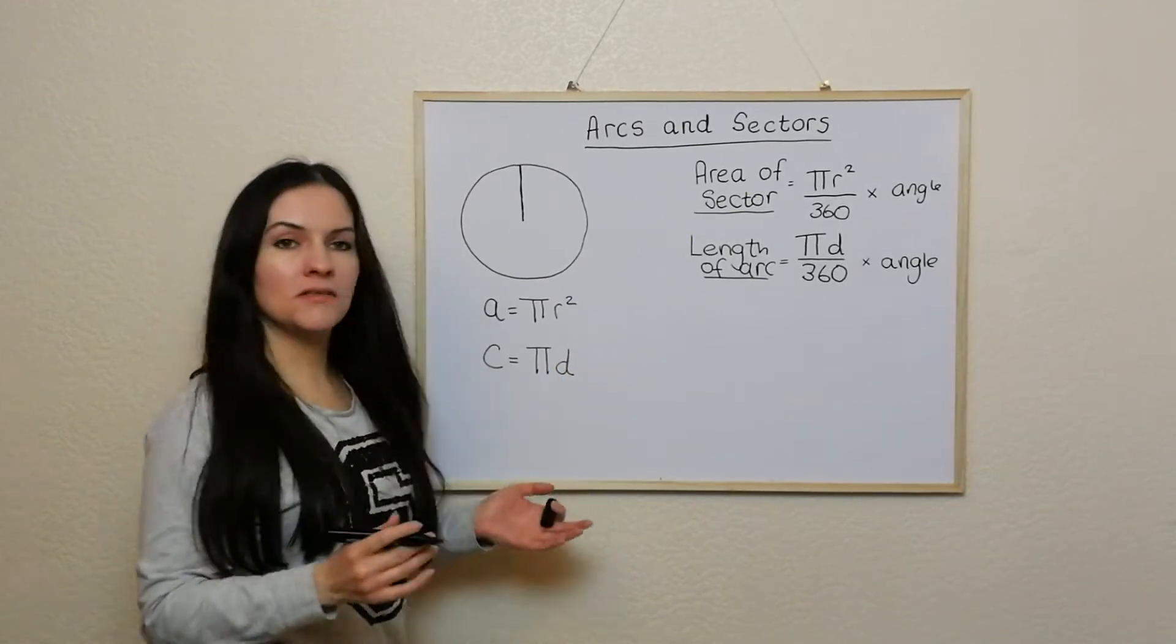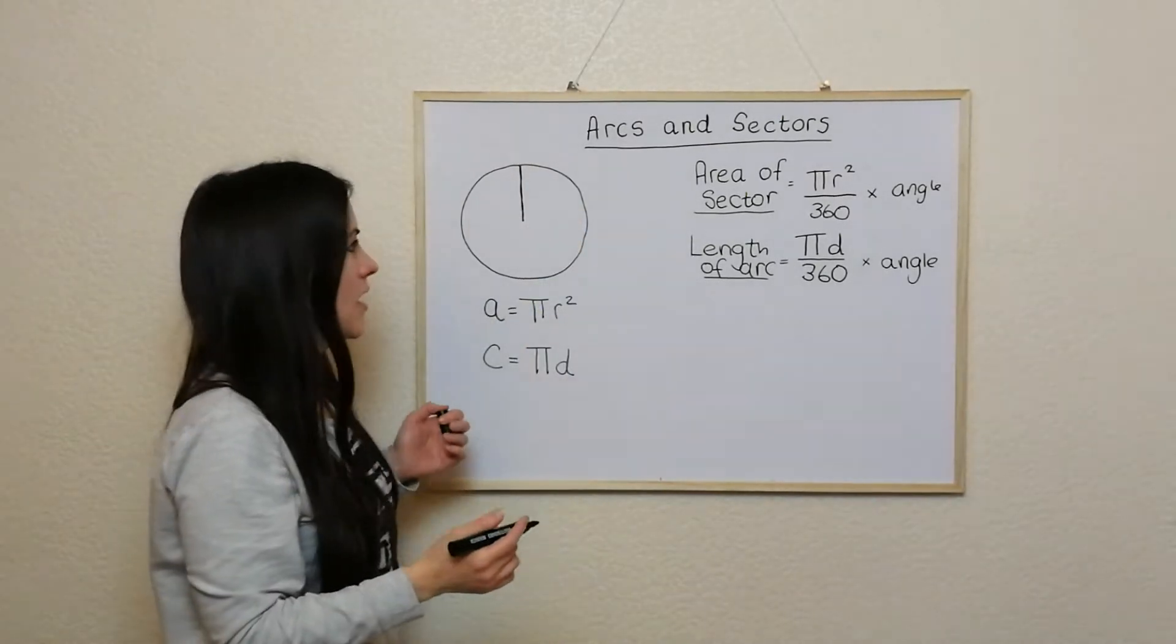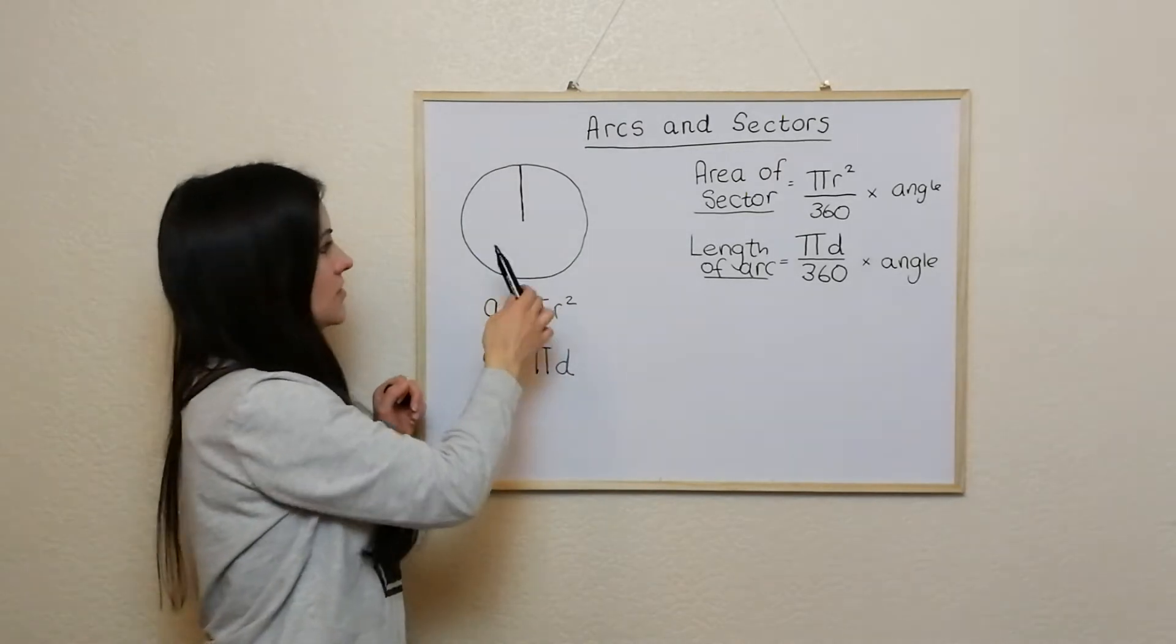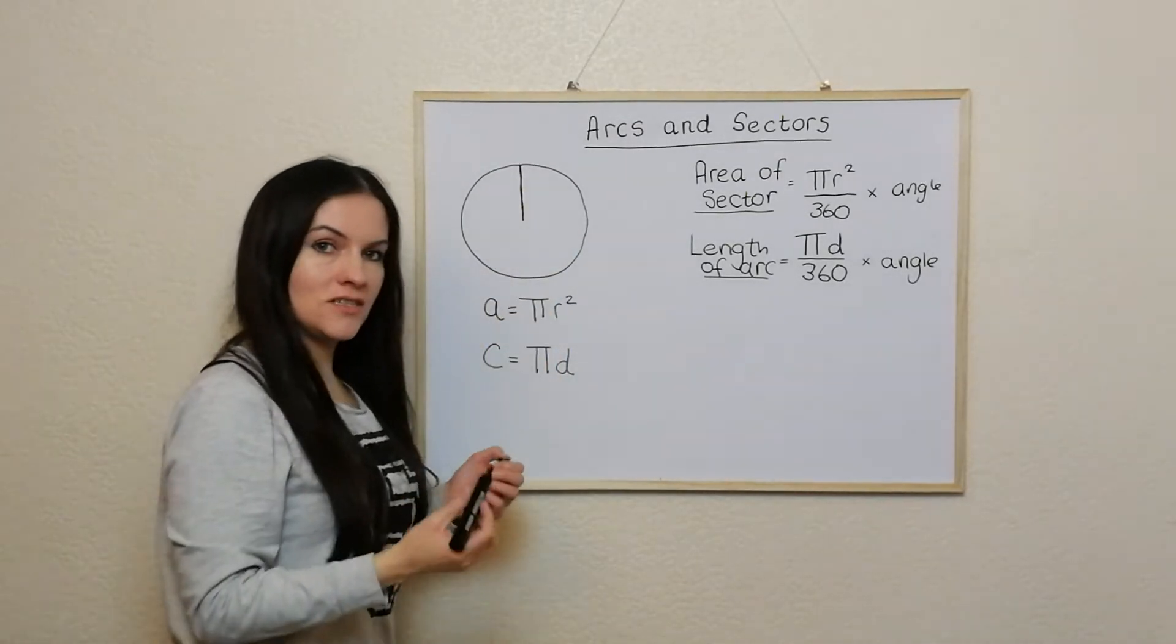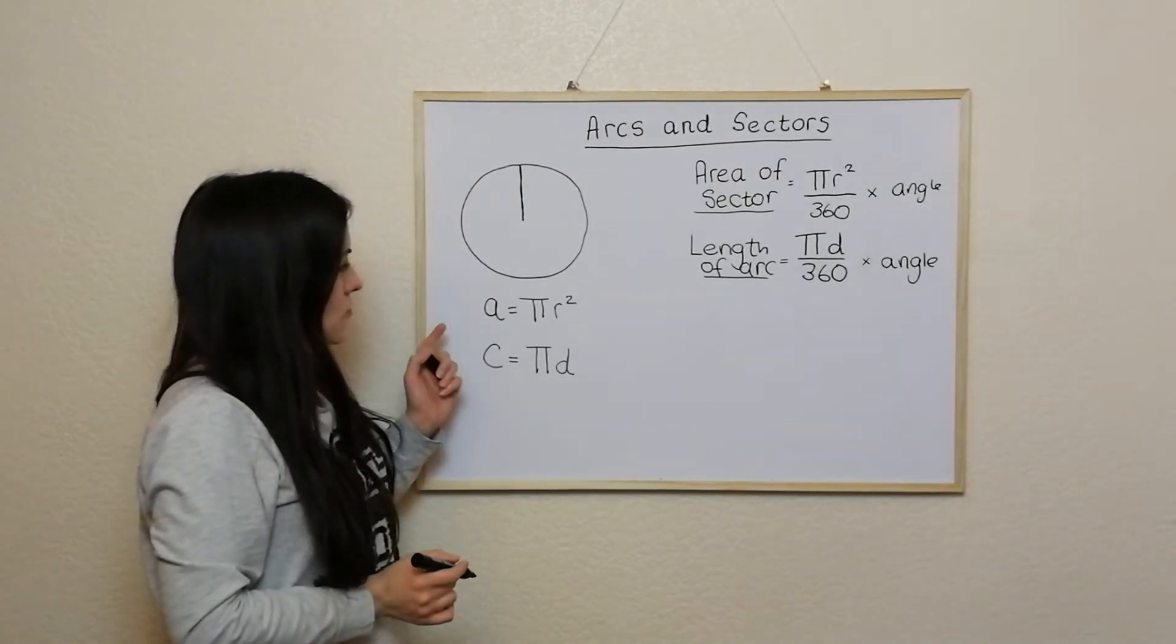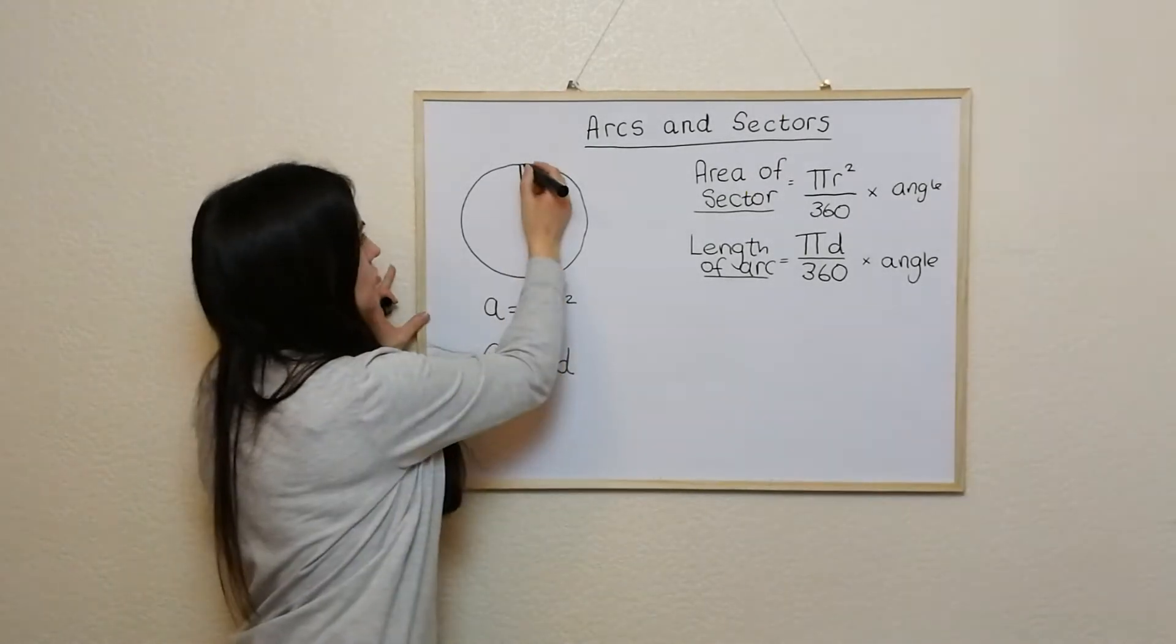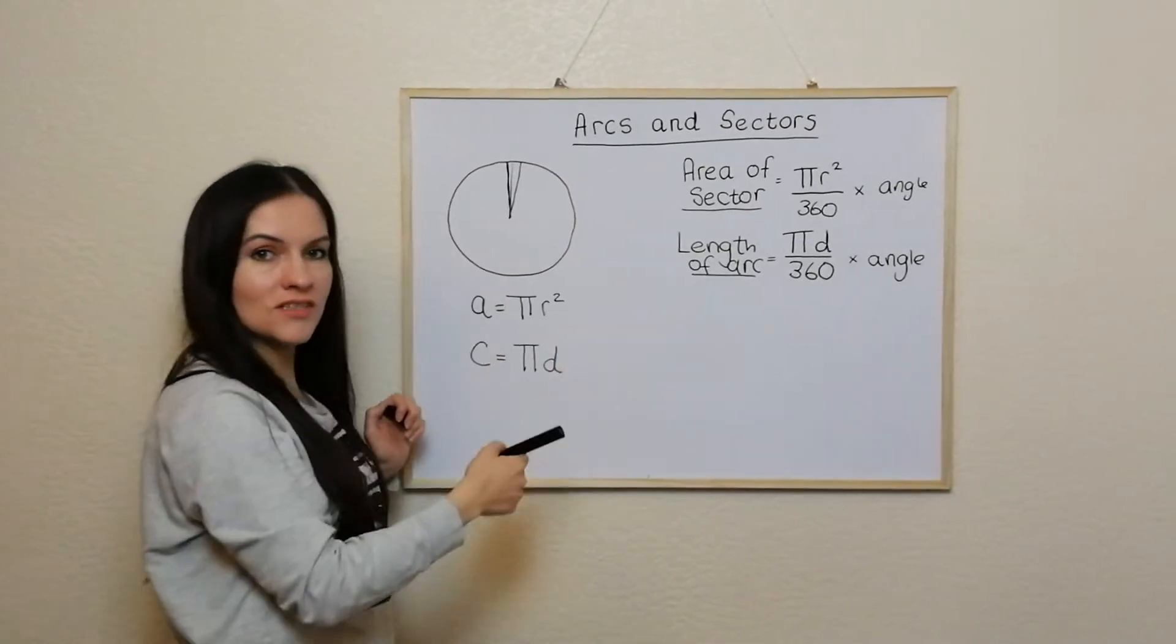The best way to think about arcs and sectors is imagine you've got a pizza, and everyone knows in a whole circle there's 360 degrees. So if you were starting here but all the way around, it was 360 degrees in the whole circle and the whole pizza. So if you had a pizza but you were going to cut it into 360 equal pieces, it would be very difficult to draw but it would be like this going all the way around and it would be 360 of them.